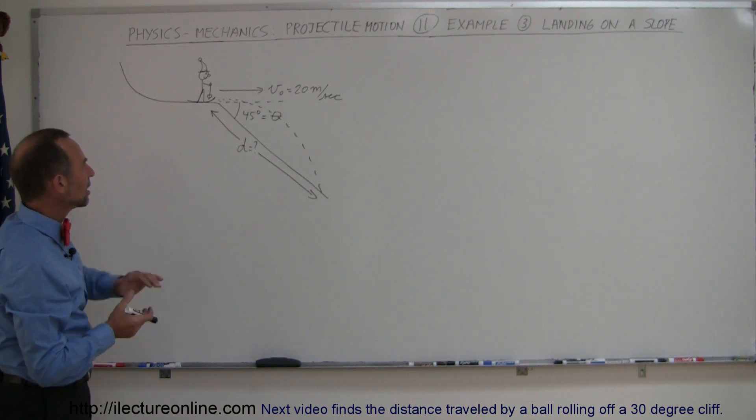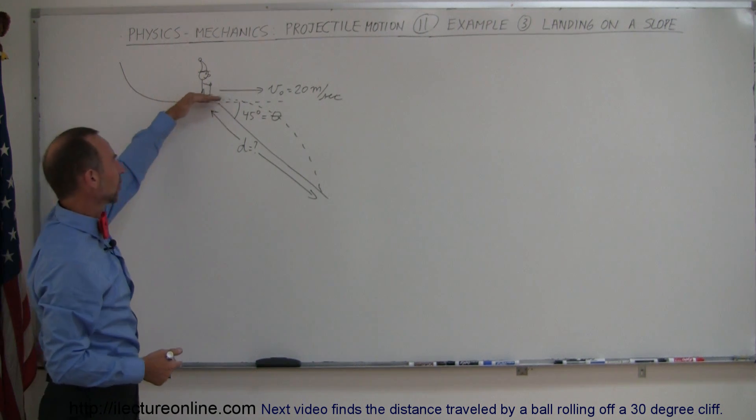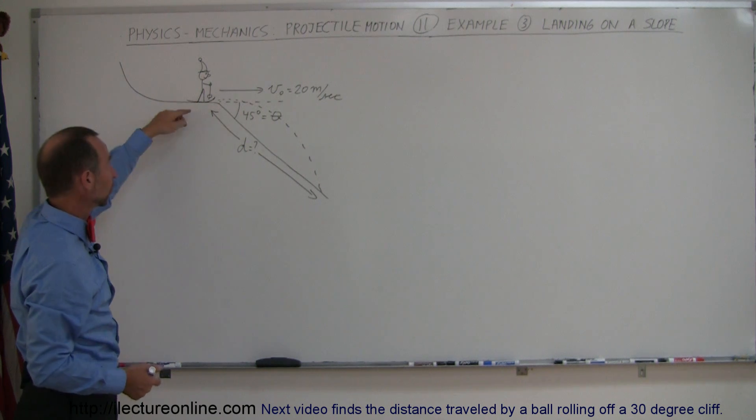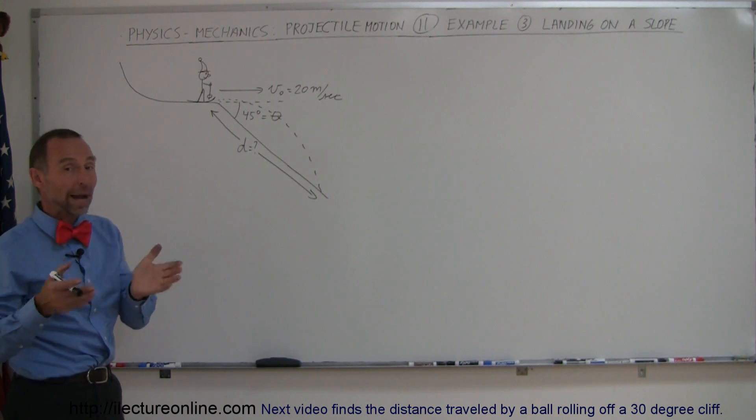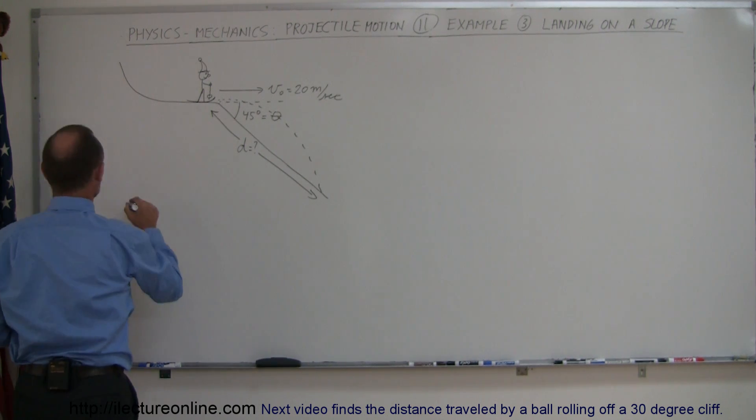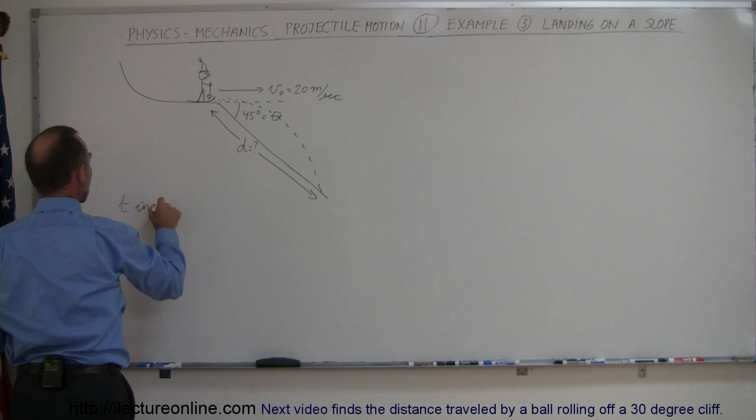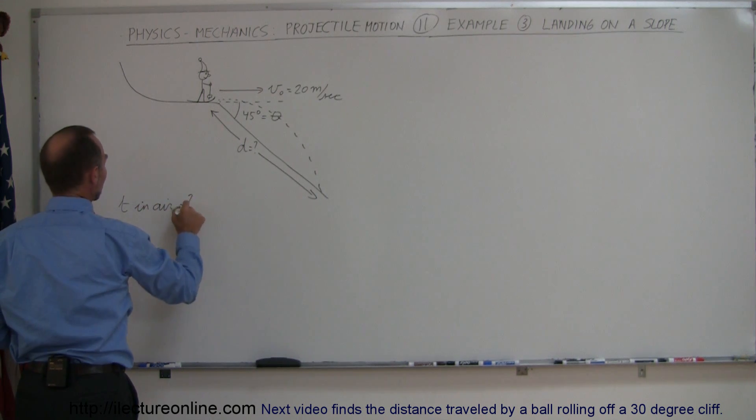And since the initial velocity is in a horizontal direction, there's no vertical initial velocity, and there's also no velocity at an angle, we don't have to find the components, which means we can go right into finding time in the air. So time in the air is equal to question mark,